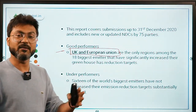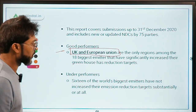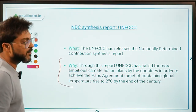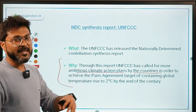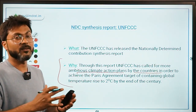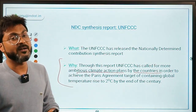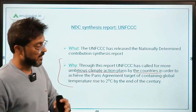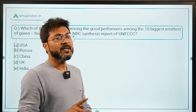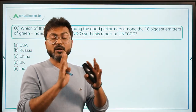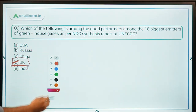The remaining 16 have not done any control over their greenhouse gas emissions. This report is calling for more ambitious climate action plans by countries in order to achieve the targets under the Paris Climate Agreement. The two things to remember: the NDC Synthesis Report is released by UNFCCC, and UK and European Union are good performers. The correct answer is option D — UK.